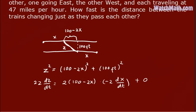Now, the question is, how fast is the distance between the trains changing? So basically, it asks about dz over dt. So what is dz over dt when they pass each other? They pass each other exactly when this x is equal to 50 miles.